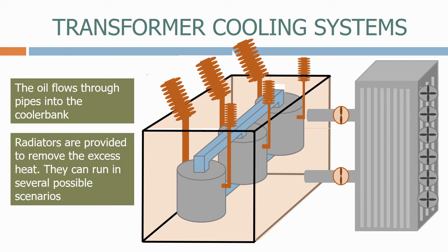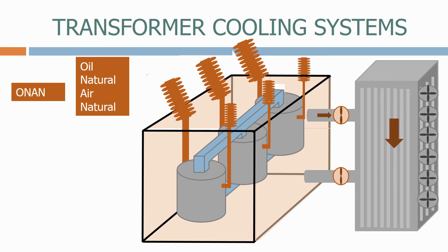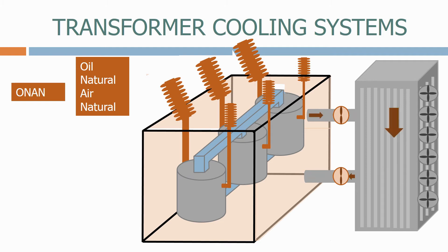Radiators are provided to remove the excess heat. They can run in several possible scenarios. The first is ONAN, which is oil natural, air natural. In this condition the oil absorbs the heat of the windings, rises to the top of the tank and flows through the top pipe into the radiator. It then cools down as it flows through the small pipes inside the cooler bank, reaches the bottom, and flows back into the bottom of the transformer tank.